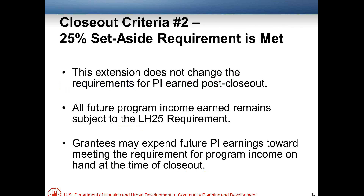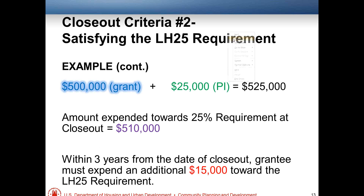This extension does not change requirements for program income earned post-closeout — it's like getting an extension on homework, but you still have to do new homework assigned. All future program income remains subject to the LH25 requirement. So in the example: if a grantee has expended $510,000 toward LH25 at closeout, but needs $525,000, they have three years from the date of closeout to spend the additional $15,000. As they earn program income during that period, they can use it to meet that remaining $15,000 requirement.